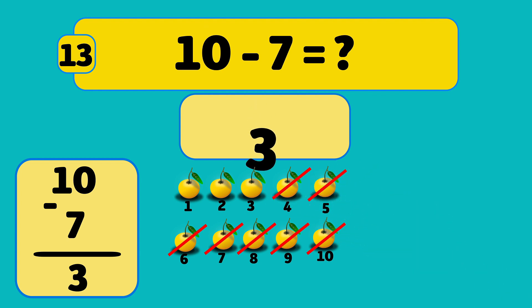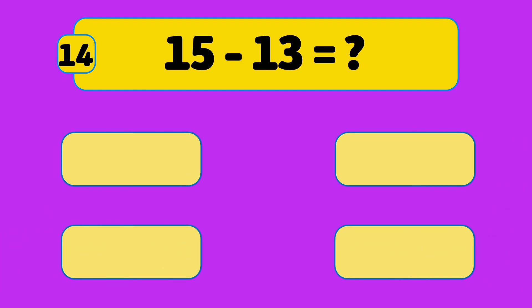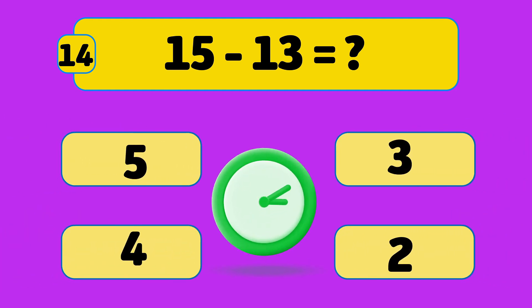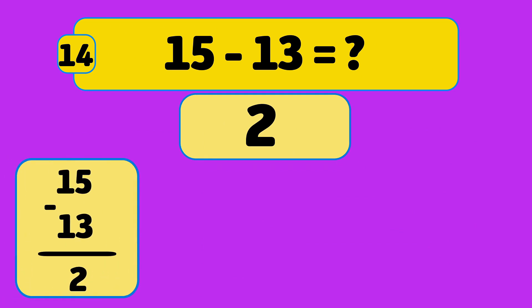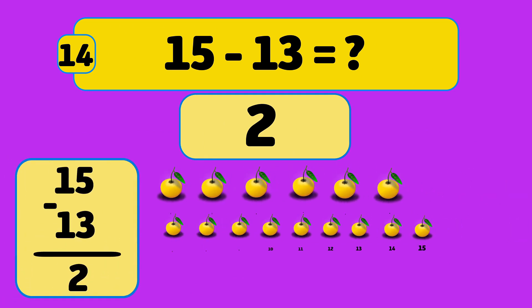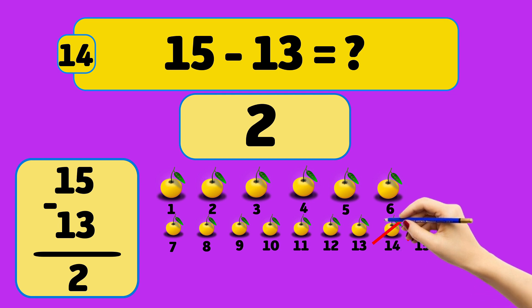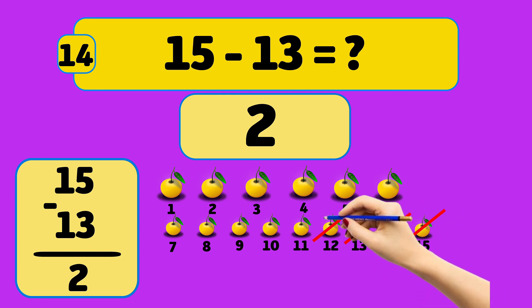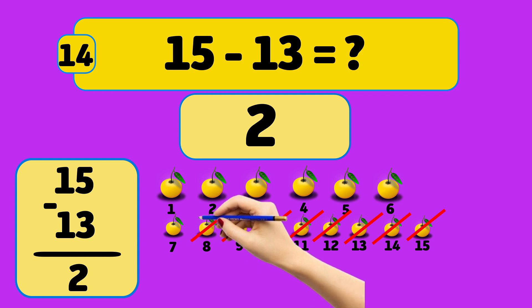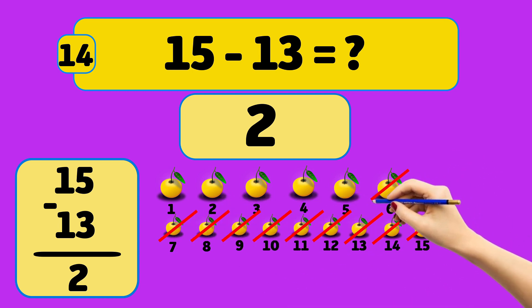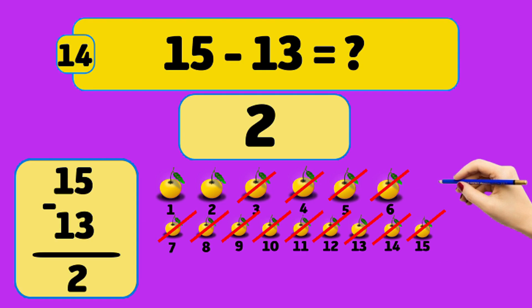What is 15 minus 13? The answer is 2. We start with 15 oranges and remove them one by one: 15, 14, 13, 12, 11, 10, 9, 8, 7, 6, 5, 4, 3. Now we have 2 oranges left.